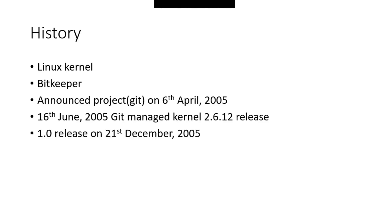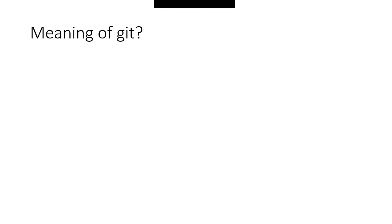The project is called Git. It is the first name of Git. In British English, Git is a name for an unpleasant person. This is the first name of Git.